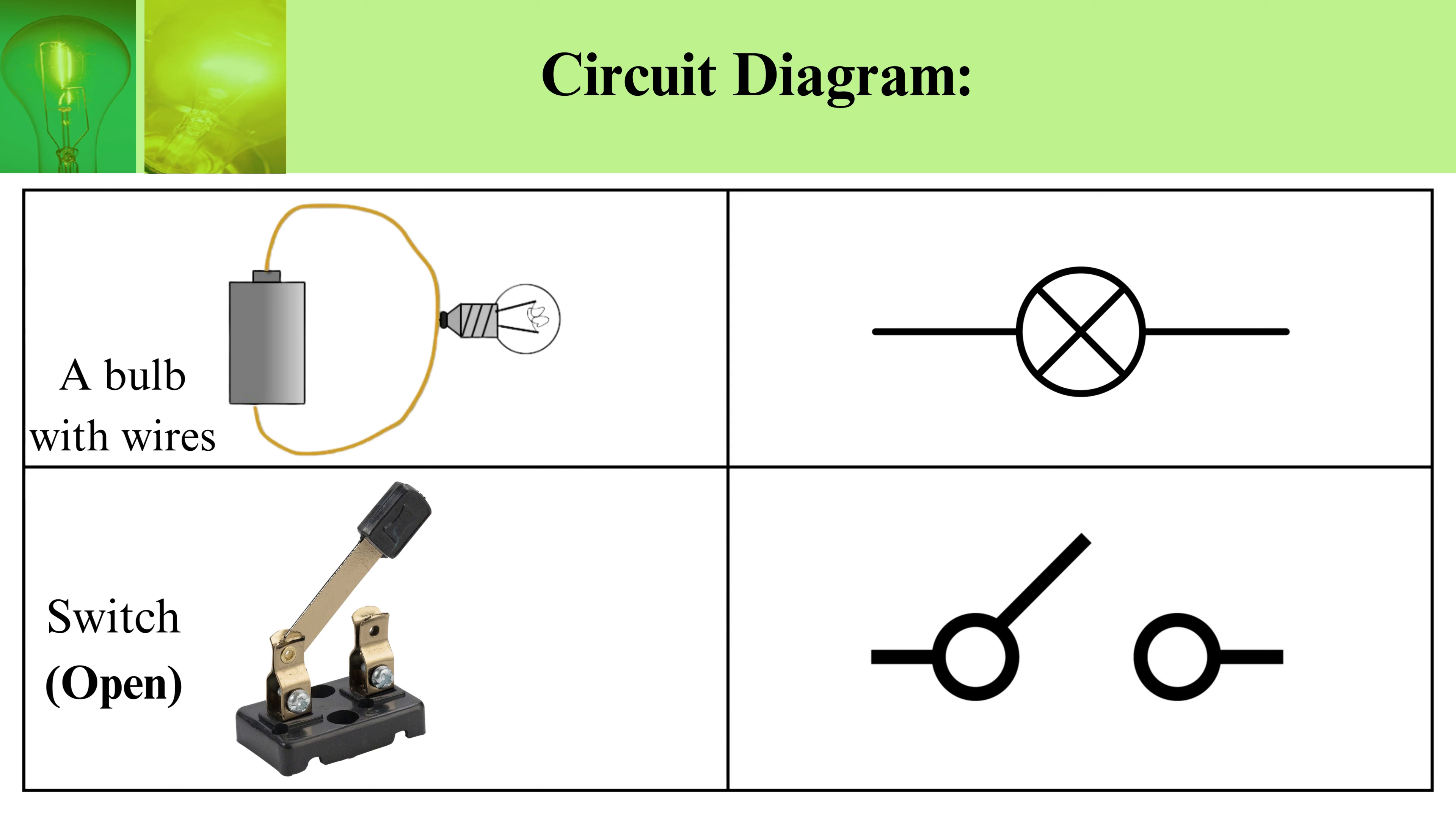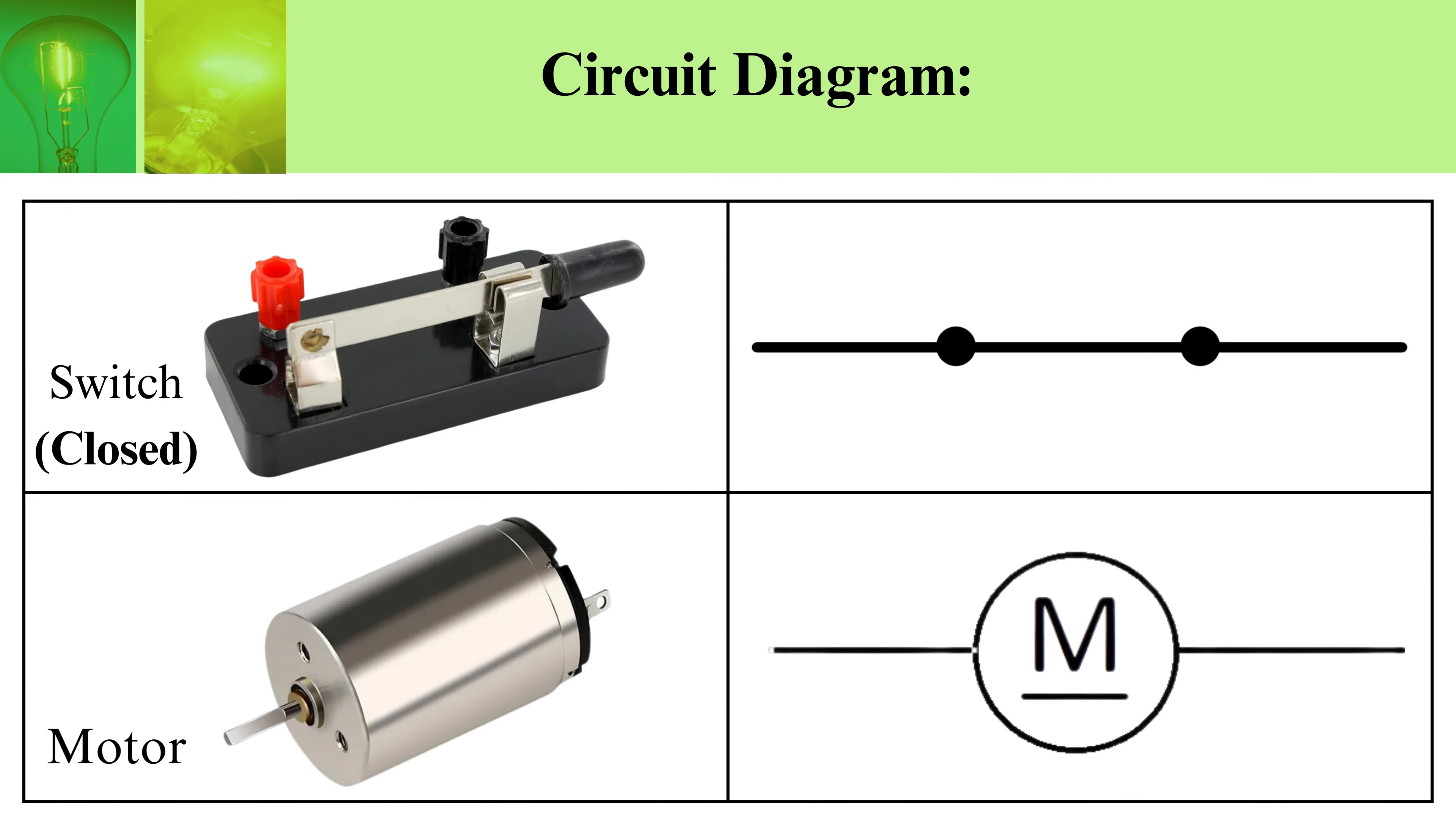Switch closed: You can see both lines are connected with two dots. Motor: You can see that a circle with M written inside is the symbol for a motor.